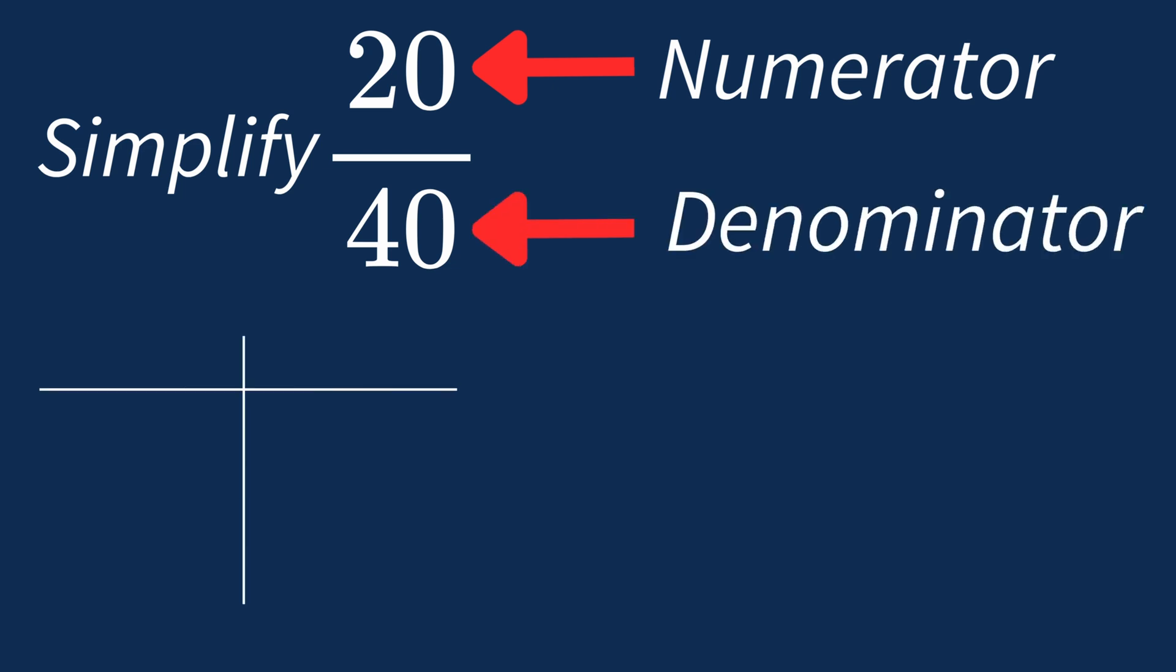First, let's list out the factors for each. For 20, the factors are 1, 2, 4, 5, 10, and 20.